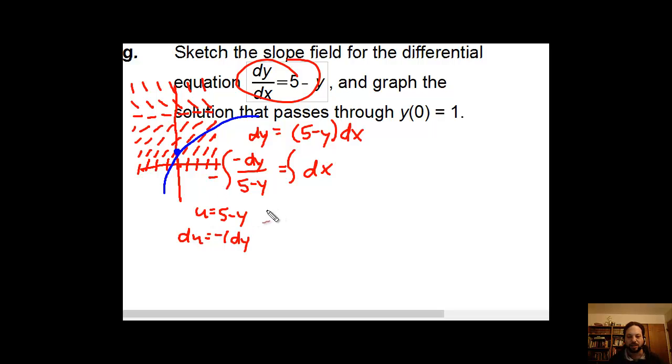This equation on the left becomes negative u to the negative 1, and then du. Of course, u to the negative 1, that's kind of like saying 1 over u, and that is going to be a natural log. Over on the right side, we have the integral of dx. That's just going to be x plus c, clearly. So if we go ahead and do this, we're going to get negative natural log of 5 minus y equals x plus c.